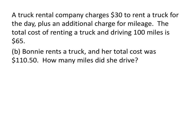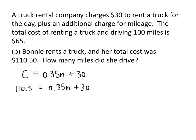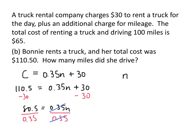Now for part B: Bonnie rents a truck and her total cost was $110.50. How many miles did she drive? We know C equals 0.35N plus 30. Since $110.50 is the cost, we substitute 110.5 in for C and solve for N. Subtracting 30 from both sides gives 80.5 equals 0.35N. Dividing both sides by 0.35, we get N equals 80.5 divided by 0.35, which works out to be 230 miles.